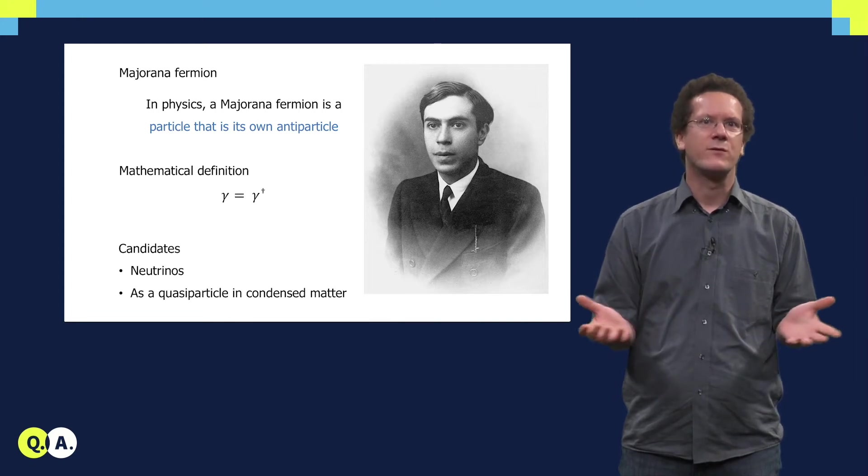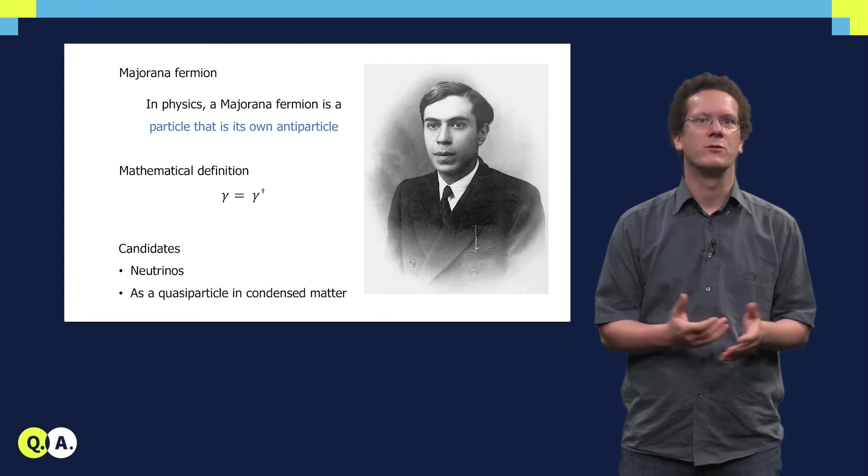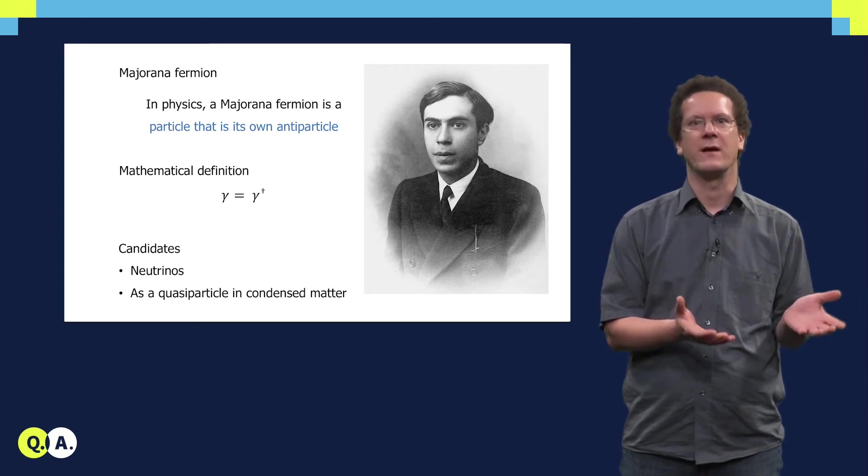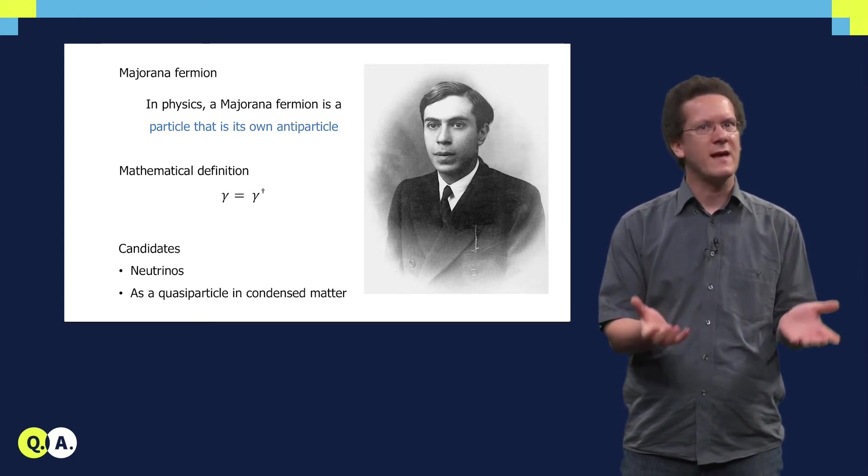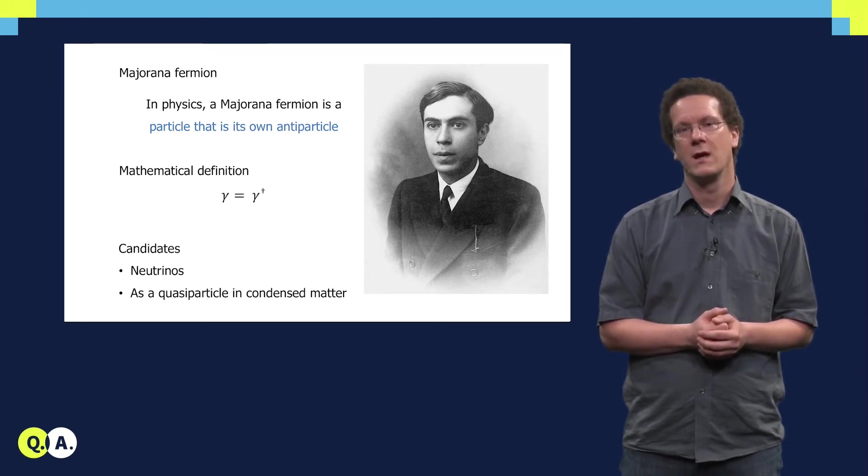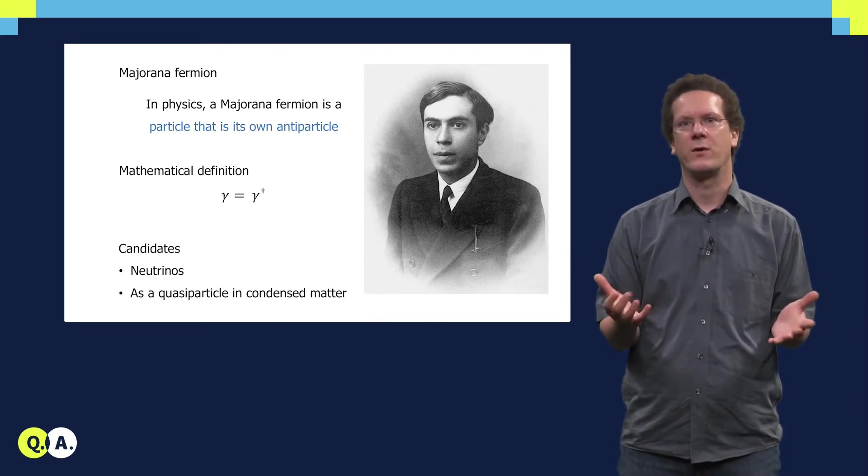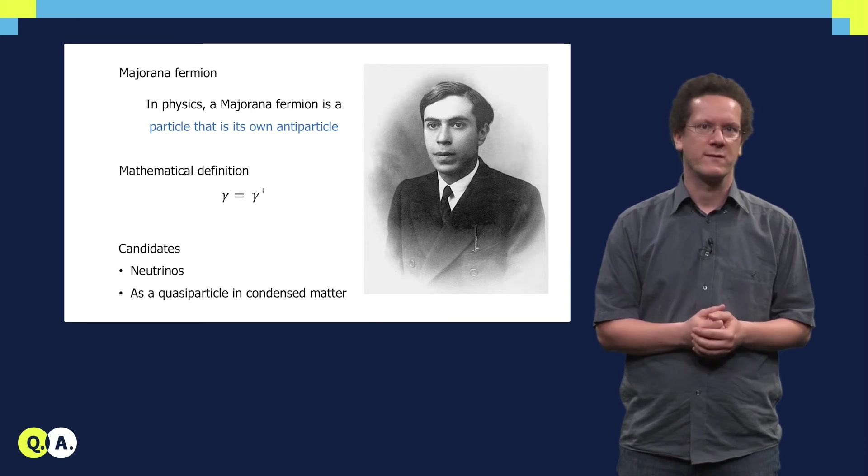There are some candidates for these Majorana fermions. For example, in high energy physics neutrinos are generally described as Dirac fermions, but there is an extension to the standard model in which they could be Majorana fermions. But people have also thought about how one could effectively realize Majorana fermions as quasi-particles in condensed matter systems.